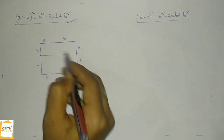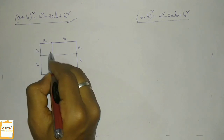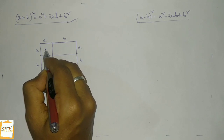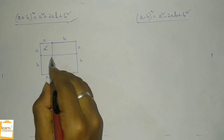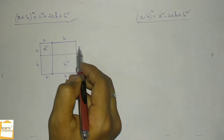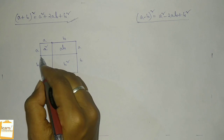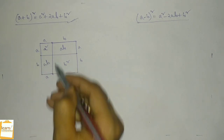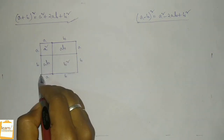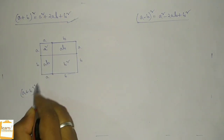Now let me join these two points and these two points. The area of this square — we know the area of a square is the side squared — so the area of this square is a squared. The area of this square is b squared. And this is clearly a rectangle with one length a and one length b, so area is a times b. Similarly the area of this rectangle is a times b. For the big square, the length of each side is a plus b, so the area of the big square is a plus b whole square.